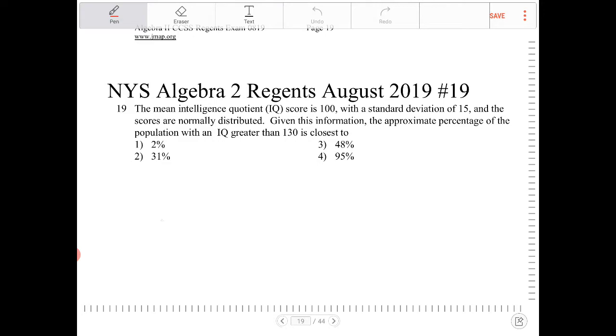By them telling us that the scores are normally distributed, what that implies is that the distribution is going to have this shape. And what you need to know is the middle here is where the mean is located. I'm not drawing anything to scale, there's no scales anywhere.